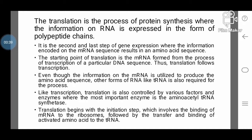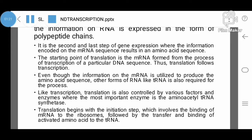Even though the information on the mRNA is utilized to produce the amino acid sequence, other forms of RNA like tRNA are also required for the process. Like transcription, translation is also controlled by various factors and enzymes, where the most important enzyme is the aminoacyl-tRNA synthetase. Translation begins with the initiation step, which involves the binding of mRNA to the ribosomes followed by the transfer and binding of activated amino acids to the tRNA.